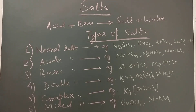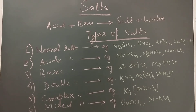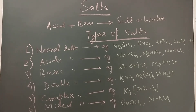Coming to complex salts — these are also called coordination compounds. An example is potassium hexacyanoferrate(II): K₄[Fe(CN)₆]. This is formed mostly by D-block elements; here the transition element iron takes part. There is a coordinate bond formed between the ligands and the metal. Other examples of complex salts are K₃[Fe(CN)₆], Ni(CO)₄, and [Pt(NH₃)₂]Cl₂.